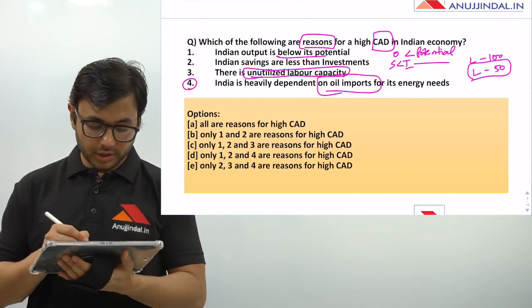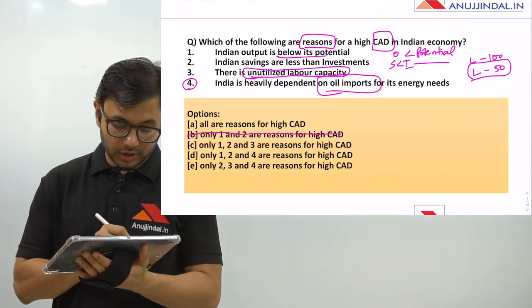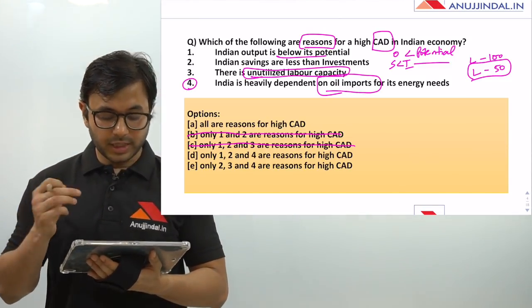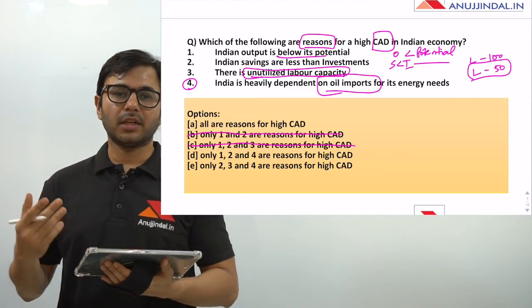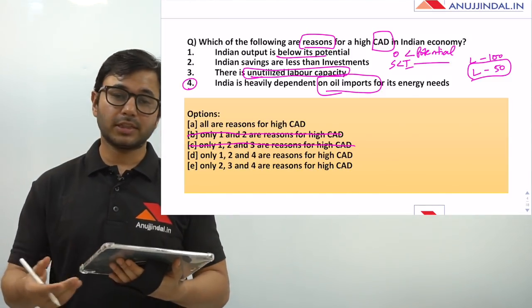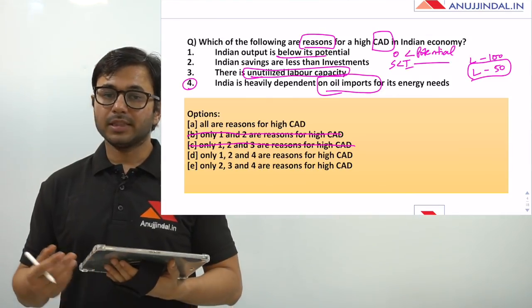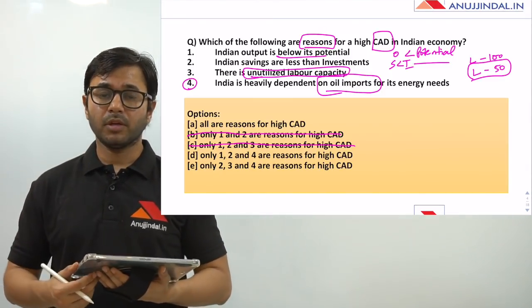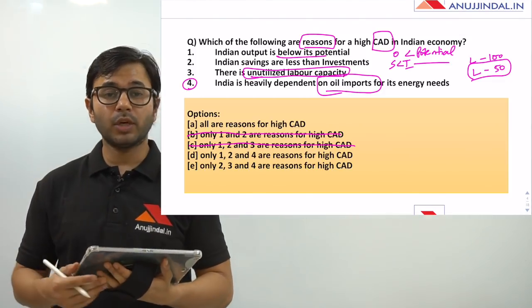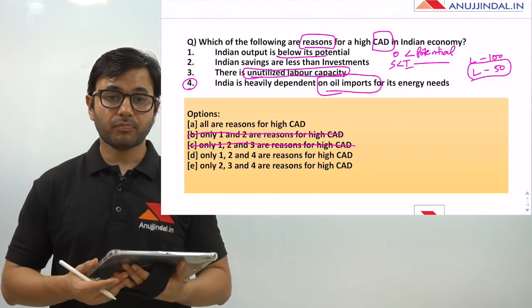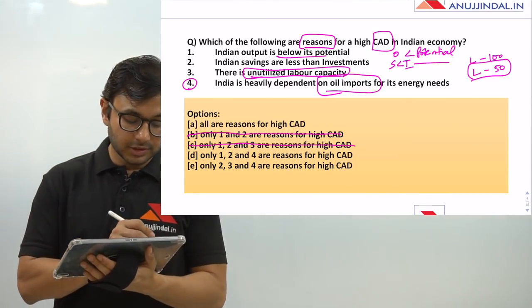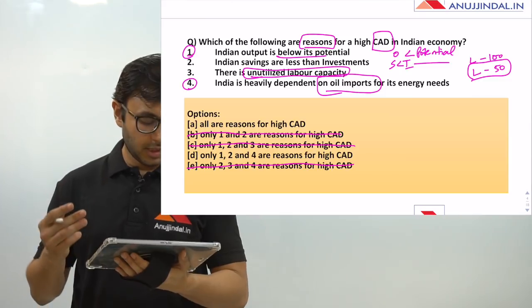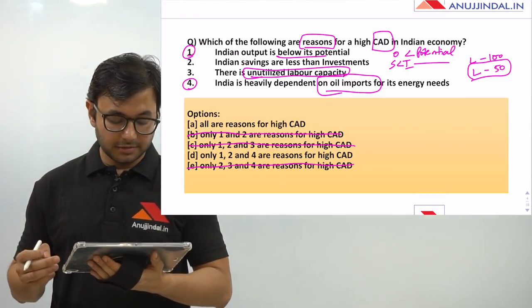We are left with options A and D. Let's revisit option 1 — Indian output is below its potential. When output is below potential, the country has to import more. For example, if the demand for mobile phones is 100 million but Indian manufacturers can only make 20 million per year, the remaining 80 million must be imported from countries like China, which automatically increases CAD. So option 1 is correct.